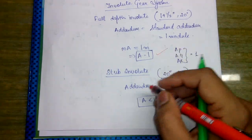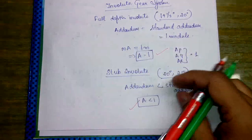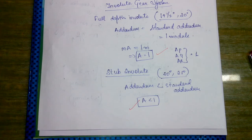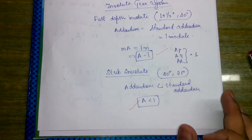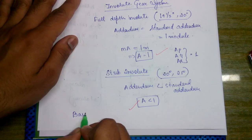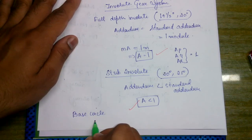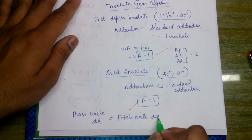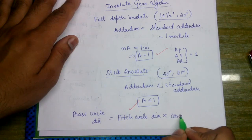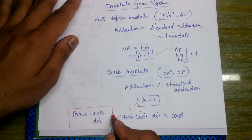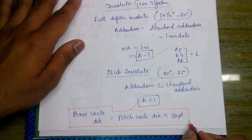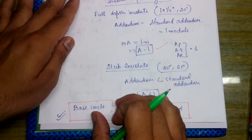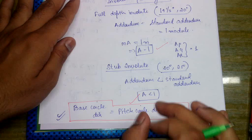We have to remember that A equals one in the case of full depth and A is less than one in the case of stub involute. We also have to remember the ranges of these pressure angles. One important formula to remember is: base circle diameter equals pitch circle diameter times cosine phi. This is an important formula used in many numericals asked in GATE, ESE, and SSC JE.